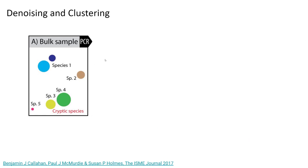Up till now, we've been frequently using the terms denoising, clustering, and features. But what exactly are these, and why should you care? To answer these, let's start with a simple example. Here we have a hypothetical unknown sample that contains several species of bacteria, denoted by the different color circles. These species are found in various abundances, as indicated by the size of their circle. For example, the green species is found in very high abundance in our sample, while the red species is found in very low abundance.